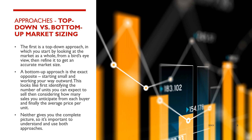The bottom-up approach looks first at identifying the number of units you can expect to sell, then considering how many sales you anticipate from each buyer, and finally the average price per unit. Neither approach gives you the complete picture, so it's important to understand and use both.